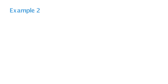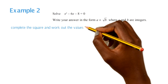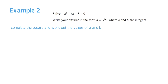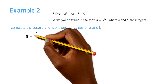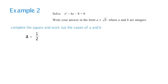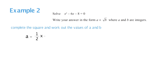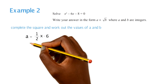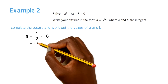In Example 2, we need to convert the quadratic formula and leave it in a format of a plus or minus root b. We're going to work out our a value, which is half of p. Our p value is minus 6, so it's a half times minus 6 — in this case we do use the negative because the brackets don't specify x minus a. So our a value will be minus 3.